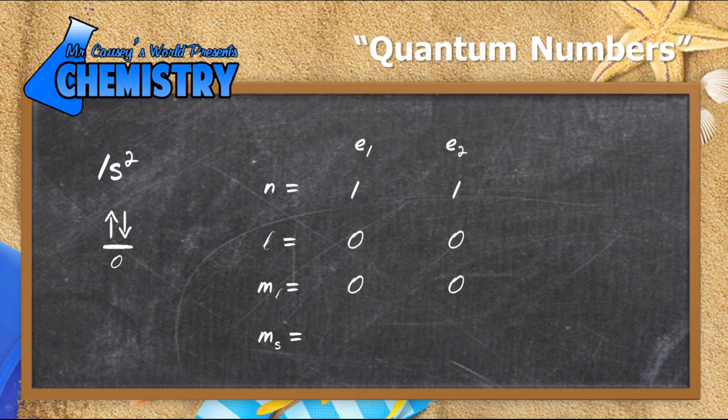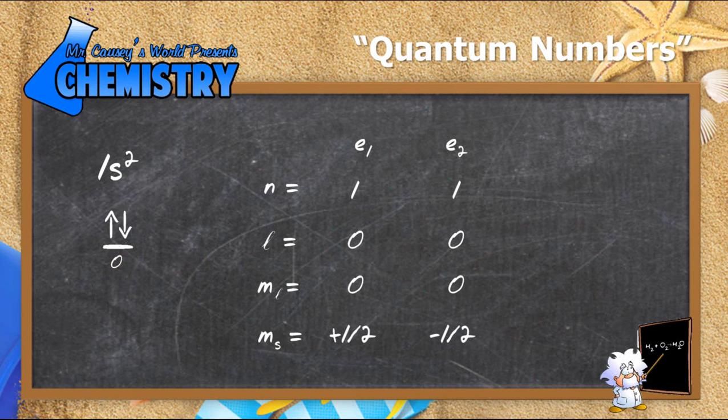Look right over there, it'll be zero. And then we have m sub-s. Well, first one in is usually positive one-half. And the second one in is negative one-half. And that's kind of just a convention. I really don't think it matters as long as one is plus one-half and one is negative one-half. Dealing with counterclockwise and clockwise.